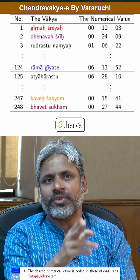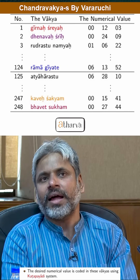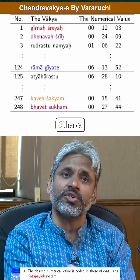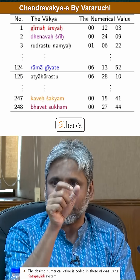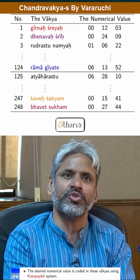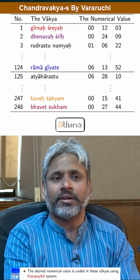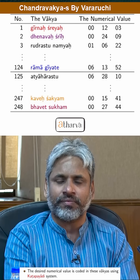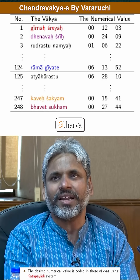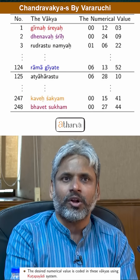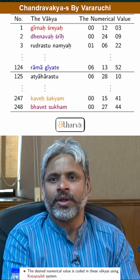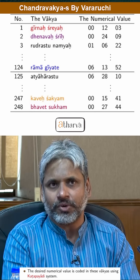There are 248 such Vakyas in total, and each Vakya represents the true longitude of the moon on each day. Specifically, 'Girna Shreyaha' gives the true longitude on the first day when the anomaly of the moon becomes 0. We start counting from when the anomaly becomes 0. The anomaly is the longitude of the moon minus the longitude of its apogee.